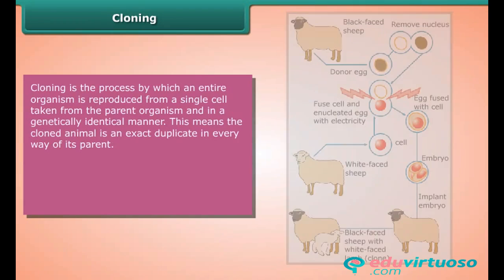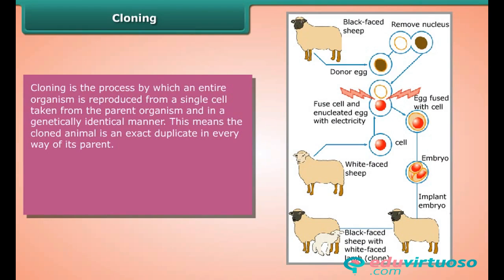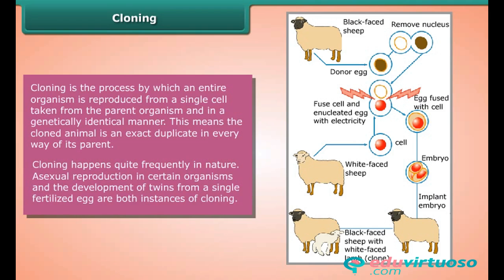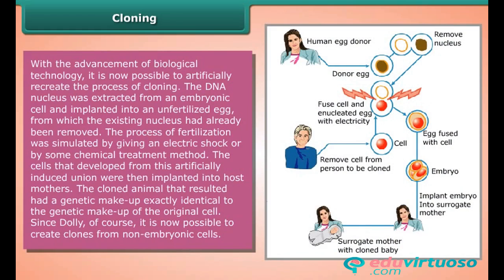Cloning is the process by which an entire organism is reproduced from a single cell taken from the parent organism in a genetically identical manner, meaning the cloned animal is an exact duplicate of its parent. Cloning happens quite frequently in nature — asexual reproduction in certain organisms and the development of twins from a single fertilized egg are both instances of cloning. With advancement in biological technology, it is now possible to artificially recreate cloning: the DNA nucleus is extracted from an embryonic cell and implanted into an unfertilized egg from which the existing nucleus has been removed, then fertilization is stimulated by electric shock or chemical treatment.